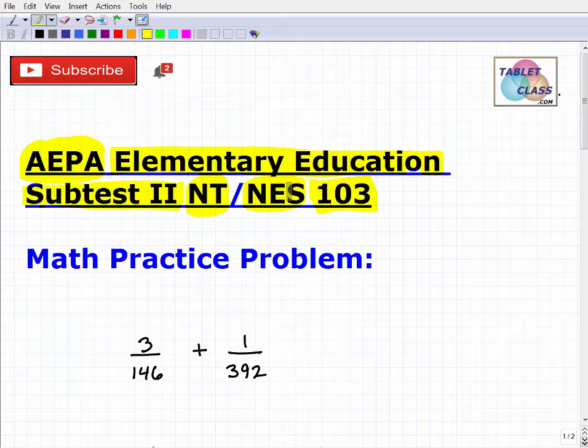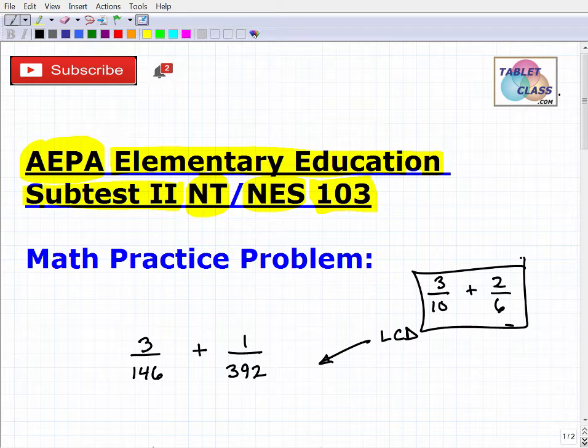With that being said, I want to go ahead and take a look at this basic math problem here. I have some fractions: 3/146 + 1/392. Let's say I wanted you to just tell me what the lowest common denominator is. Now you're probably like, 'Oh boy, this is a lot of work.'